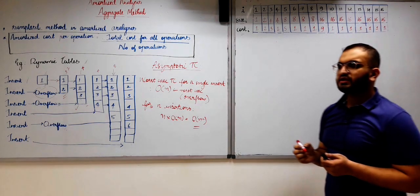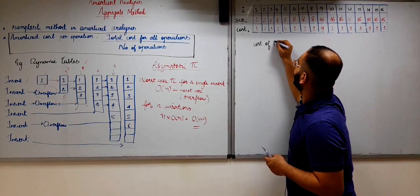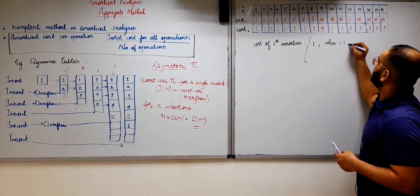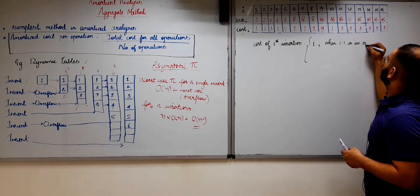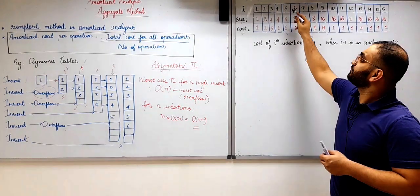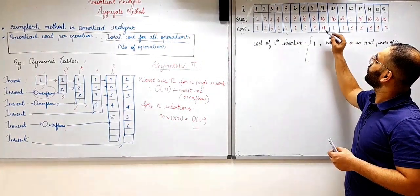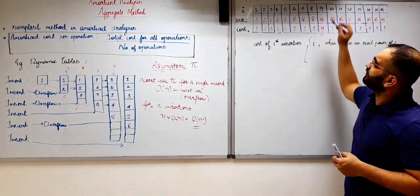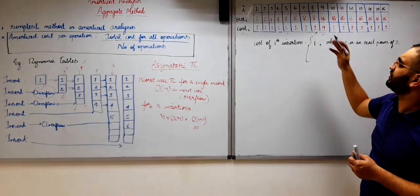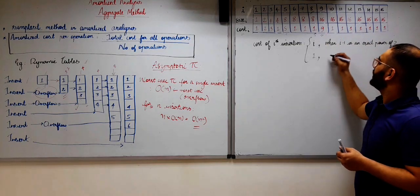All remaining insertions without overflow have cost 1. To summarize this table: the cost of the i-th insertion equals i when i minus 1 is an exact power of 2 — for example when i is 5, i minus 1 is 4 which is a power of 2, and when i is 9, i minus 1 is 8 which is also a power of 2. Otherwise the cost is 1.